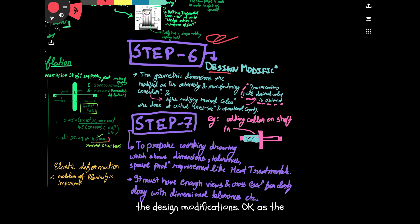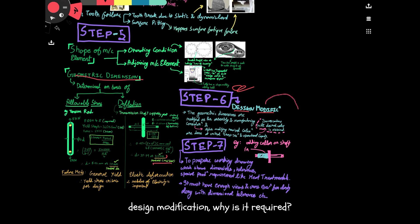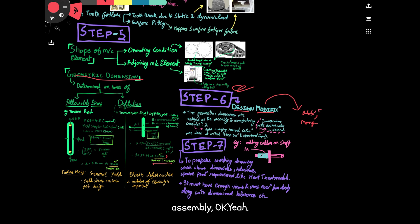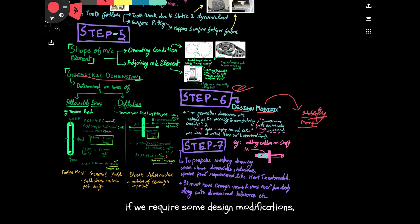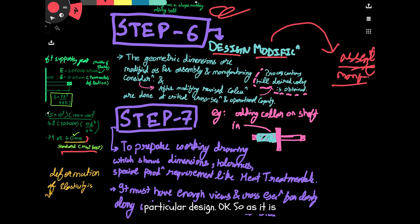Step number six involves design modifications. Whatever geometrical dimensions we have finalized and standards we have chosen, we may still require modifications from an assembly point of view or a manufacturing point of view. The geometrical dimensions are modified as per assembly or manufacturing considerations.